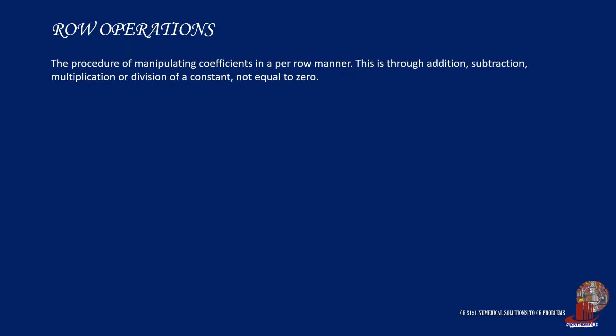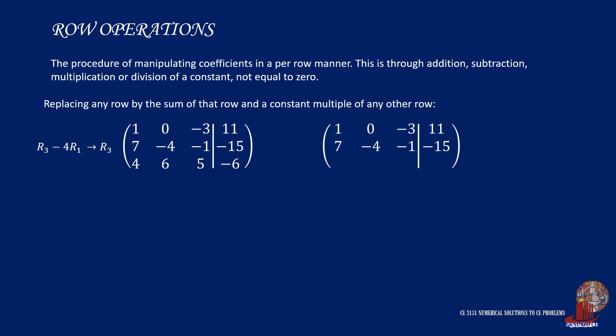The third row operation involves replacing any row by the sum or difference of a constant multiple of another row. Let's say from the example we wanted to update the third row by subtracting 4 times row 1 from row 3. Starting from element 3,1, we have R3 as 4 minus 4 times R1, showing 4 minus 4, and that gives 0 placed on the third row.